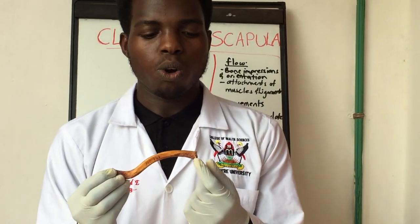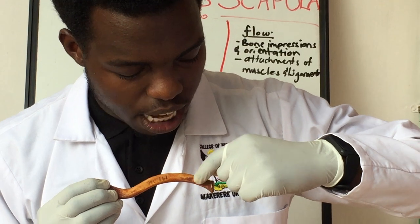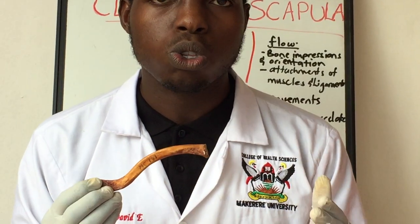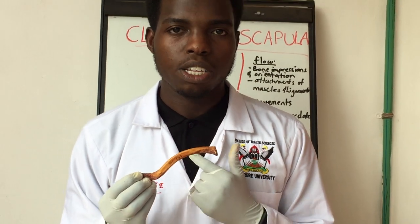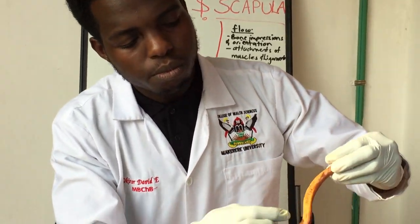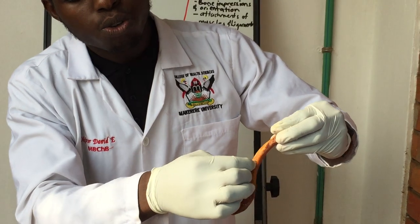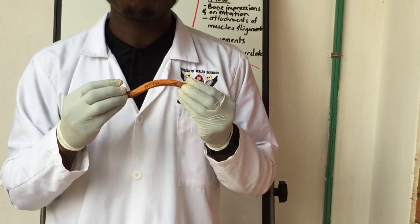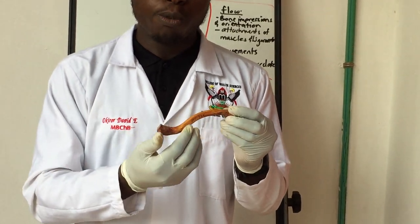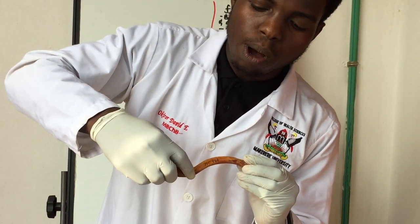Now let's look at the impressions on the inferior surface of the clavicle. Medially, as you can see, there is an oval impression for the attachment of the costoclavicular ligament — this ligament joins the clavicle to the first rib. Moving more laterally, there is a groove known as the subclavius groove where the subclavius muscle attaches to the clavicle.